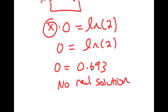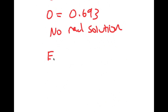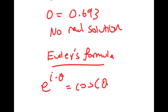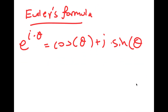However, there is still a way to find the value of x here. So Euler's formula states that if I have something in the form e to the power of i times theta, this is equal to cosine of theta plus i times sine of theta. I know this may seem a little confusing right now, but just bear with me.